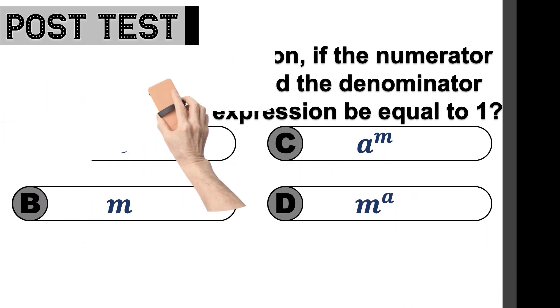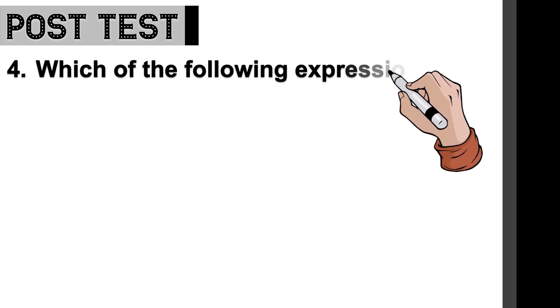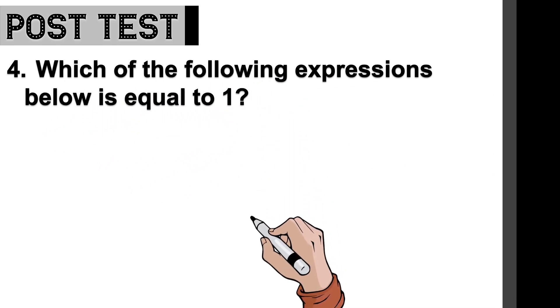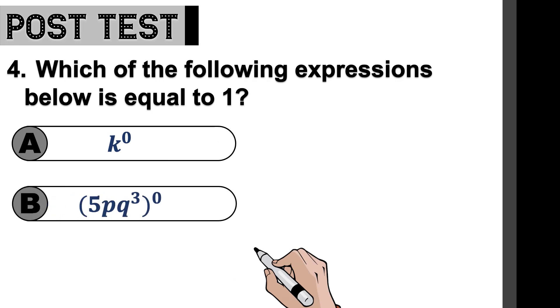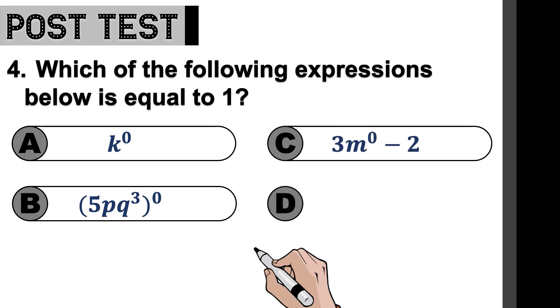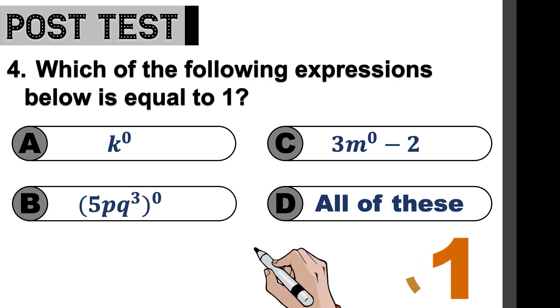We are almost done with our post-test — two more questions. Here comes question number four: Which of the following expressions below is equal to one? Is it A, k to the power of zero? B, is it the quantity 5pq cubed raised to zero? C, is it 3 times m to the power of zero minus two? Or letter D, all of these? Time is up.